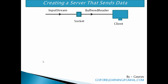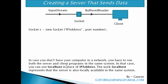Next is how to create a client that receives data. We can write a client program that receives all the strings sent from the server. First, create a socket at the client side using the Socket class: Socket s = new Socket(IP address, port number). The IP address here is the address of the server machine where the server program is running. In case you don't have your computer in a network, run both server and client programs in the same system and use 'localhost' in place of the IP address. The word localhost represents that the server is also locally available in the same system.